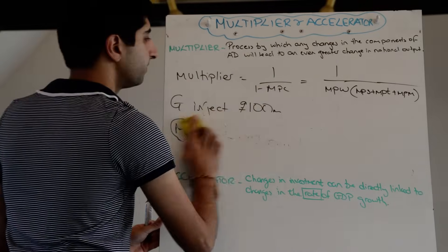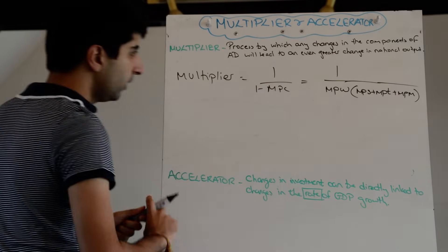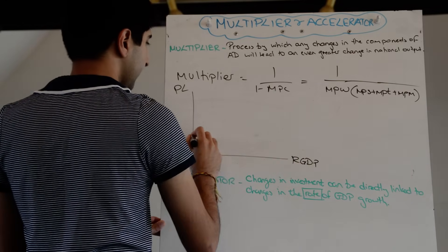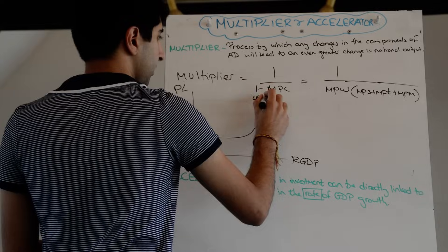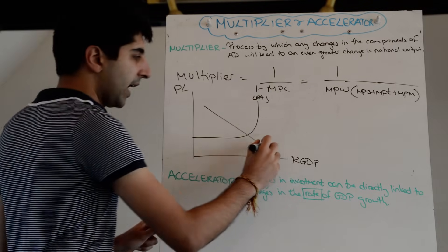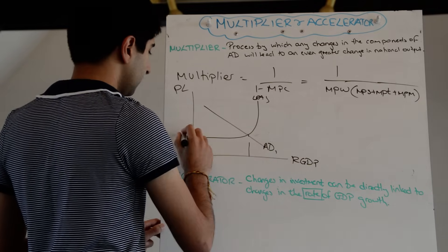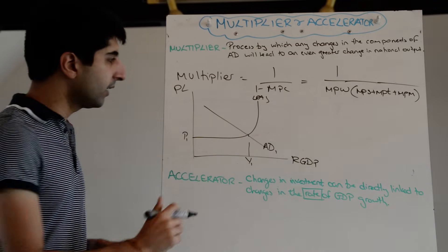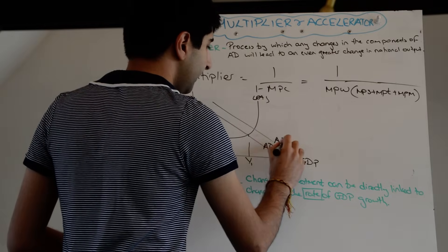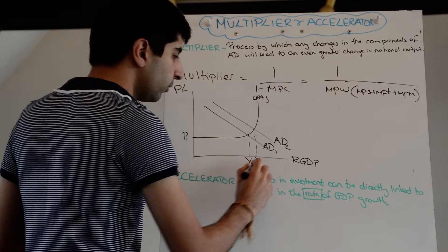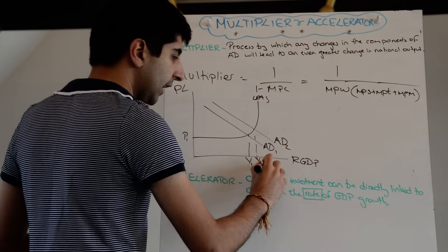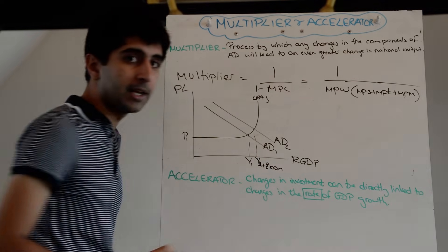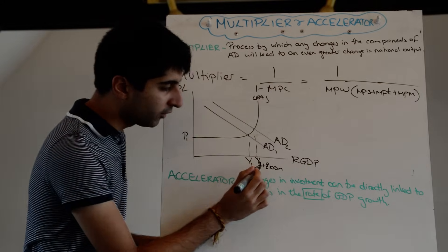Now we can actually show that on a diagram. We have the price level on one axis and real GDP on the other. Let's take a Keynesian long-run aggregate supply curve, and let's say AD initially was at AD1, with price level P1 and output level Y1. Government spending has increased by £100 million, and we know that's going to shift AD to the right to AD2, increasing growth from Y1 to Y2 — let's be more specific, that's Y1 plus £100 million.